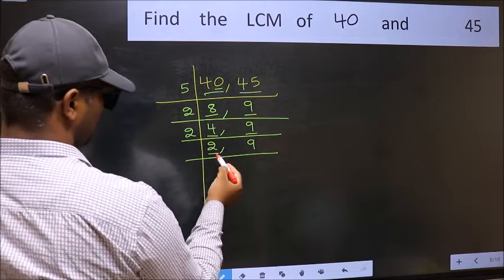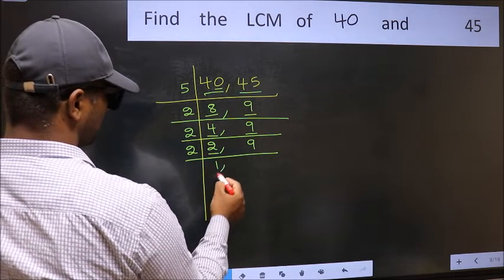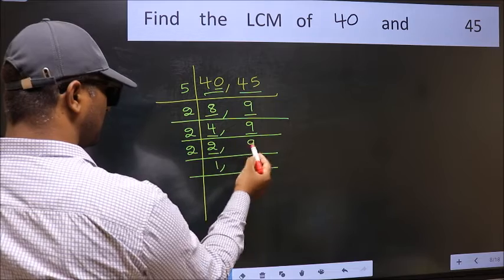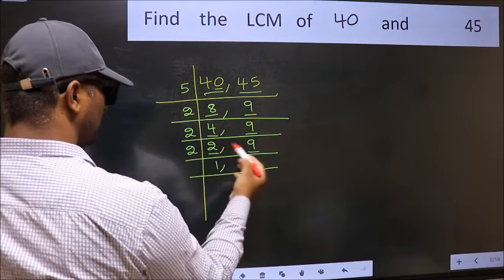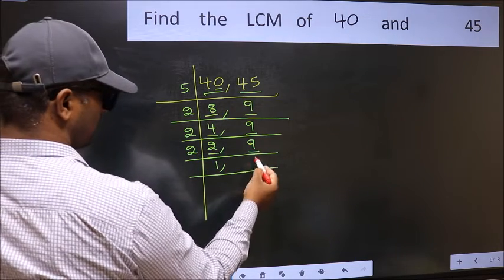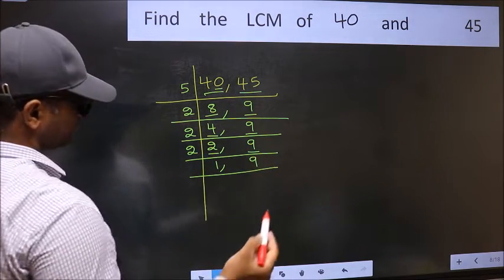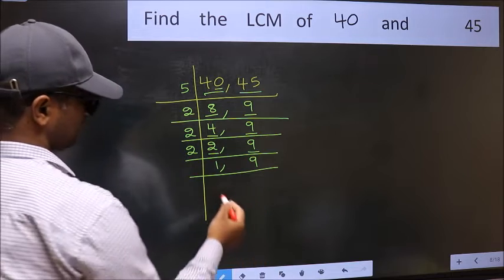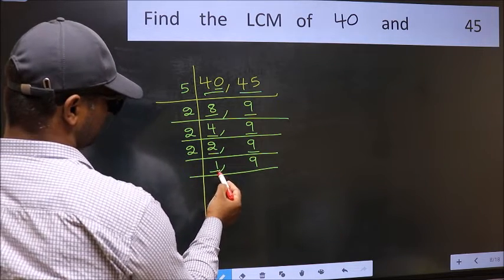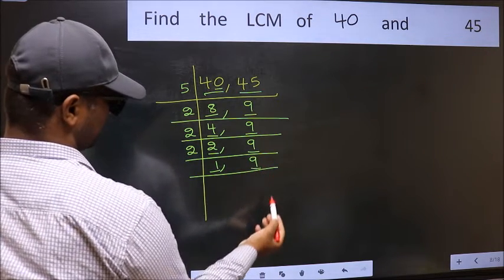Now here we have 2. 2 is a prime number, so 2 times 1 is 2. The other number 9 is not divisible by 2, so you write it down as it is. Now we got 1 here, so focus on the next number 9.